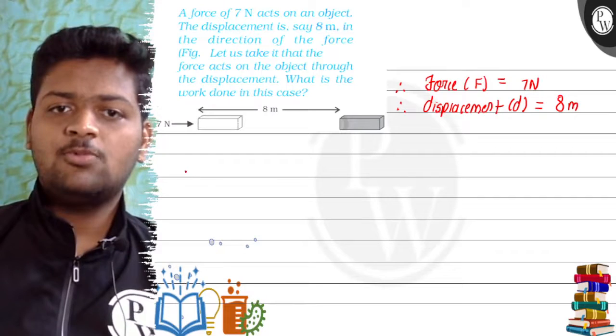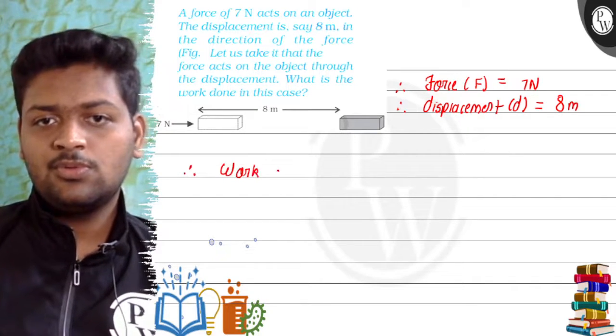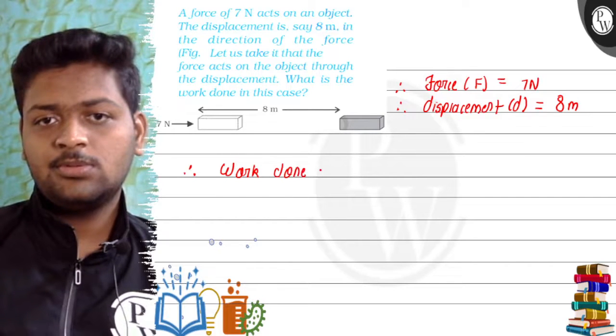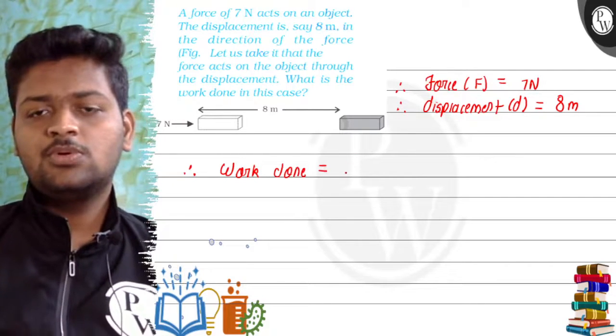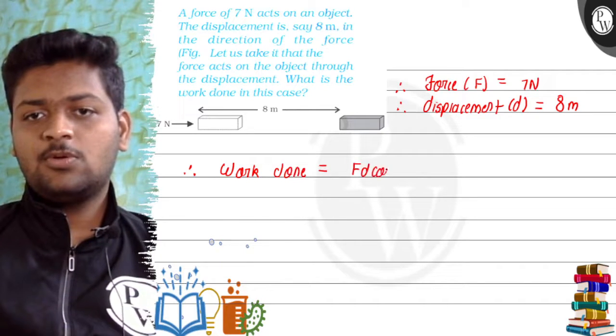What have we done in this case? We have given it as work done. Work done is equal to, we know that the formula of work done is F D cos theta.